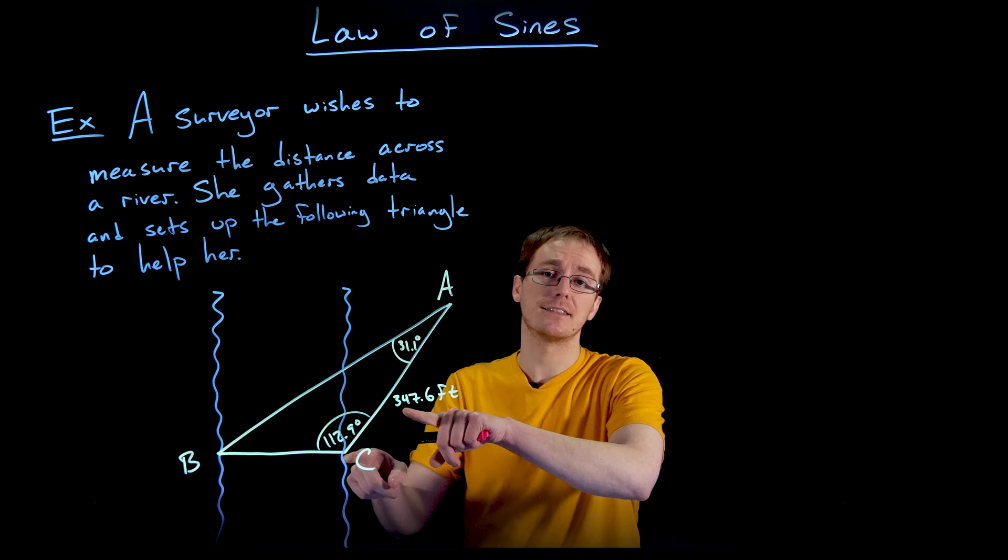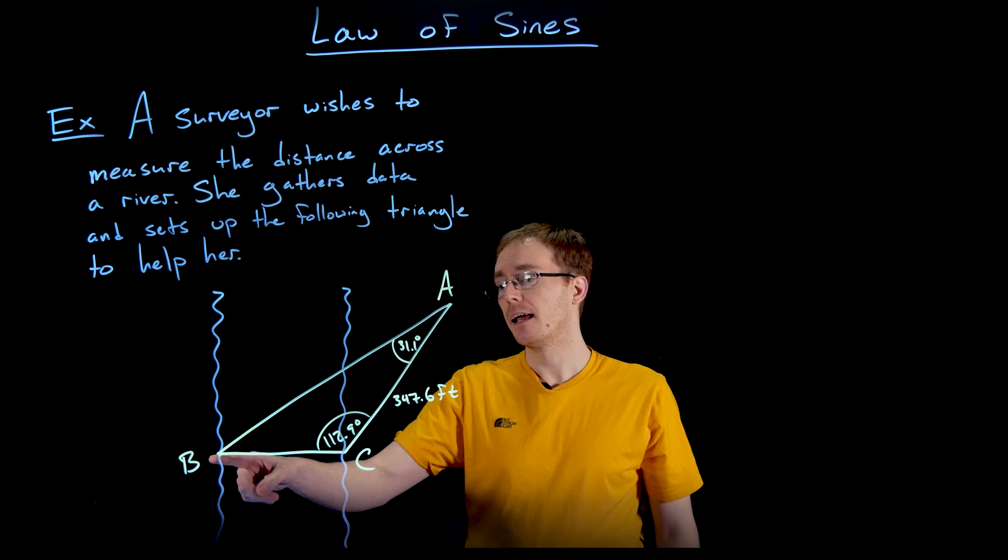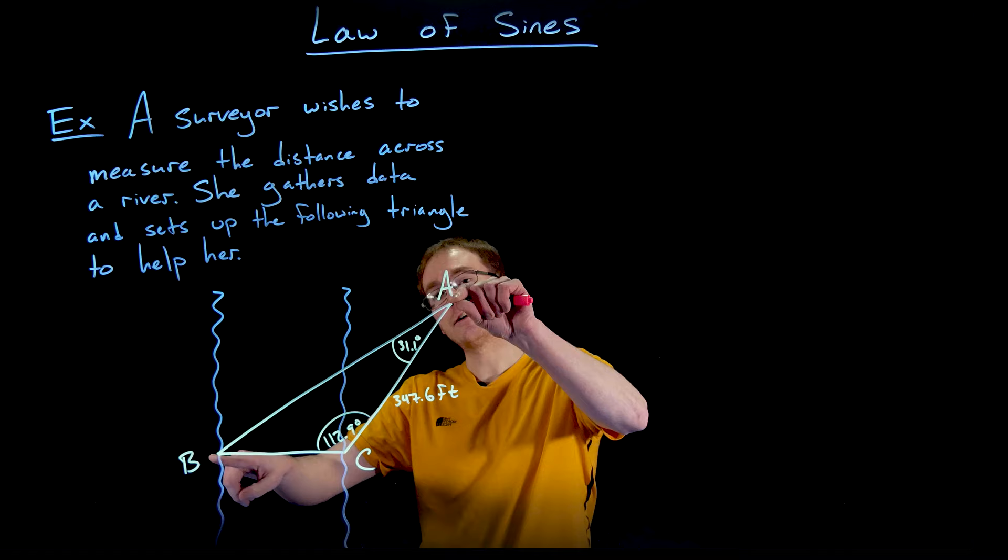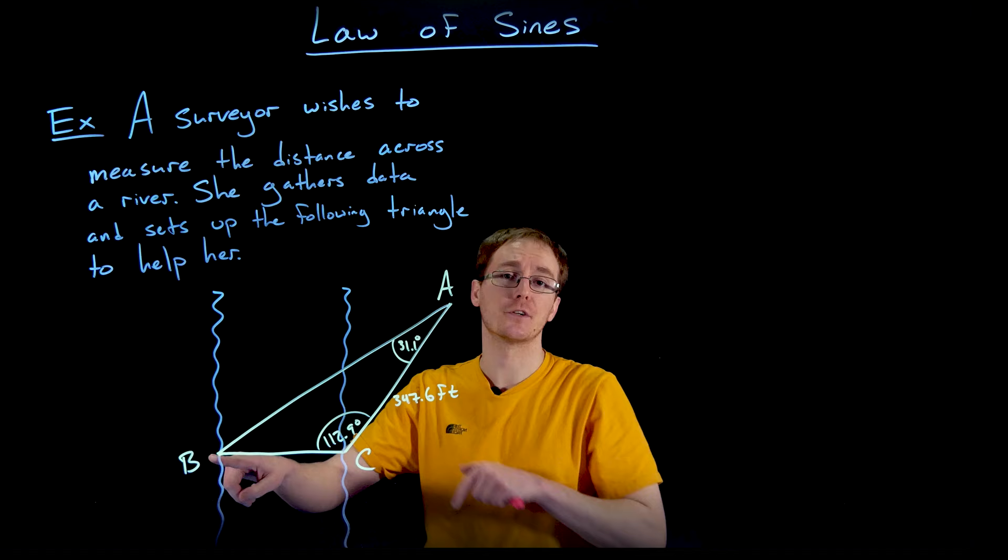There's this point on the opposite bank of the river from point C, that's point B. What the surveyor did was choose that point B opposite of point C and take this angle measurement at their starting position between point C and point B to measure the angle of 31.1 degrees.